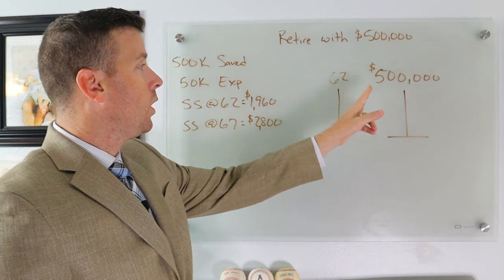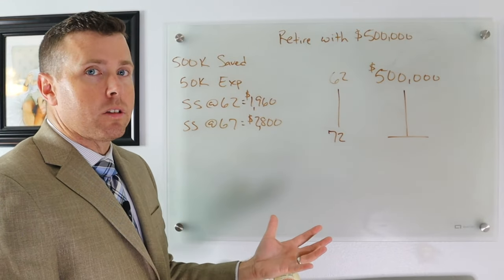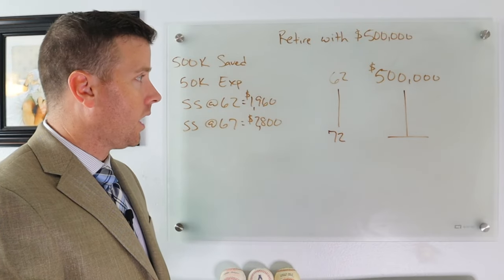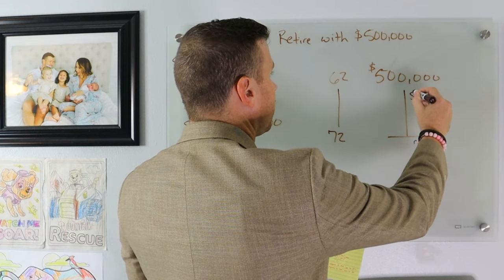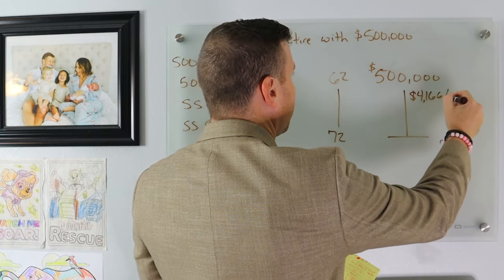So we're 62 years old. We've got $500,000 saved for retirement. How long is this going to last? Can I retire at 62 with $500,000? Let's look at this. Our expenses are $4,166 per month.